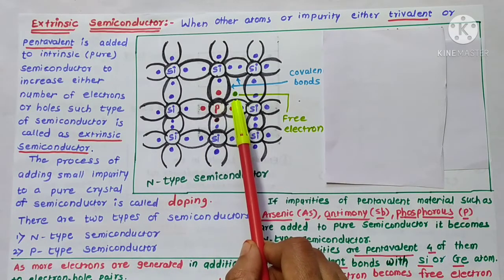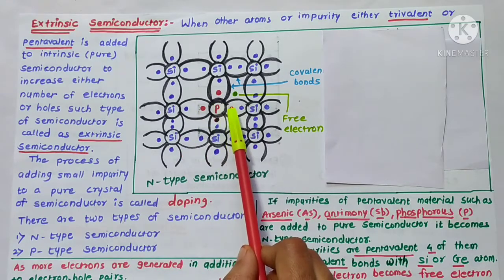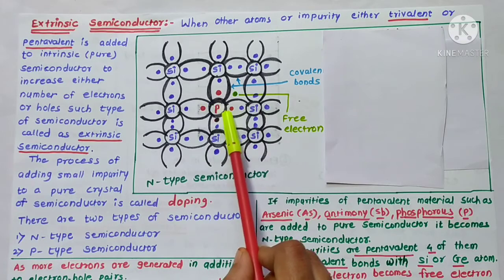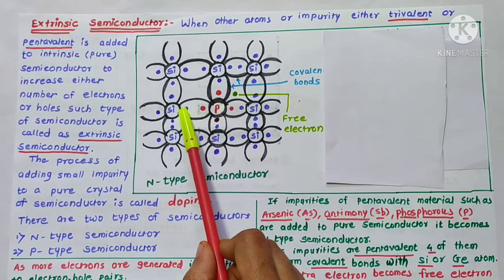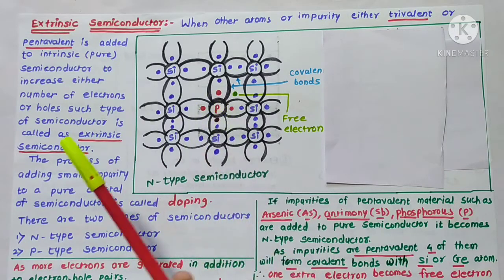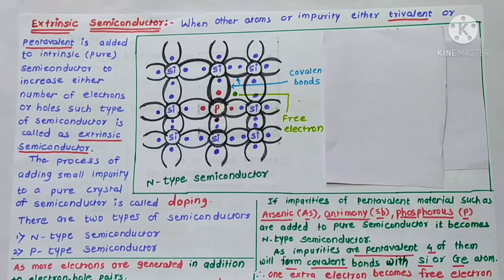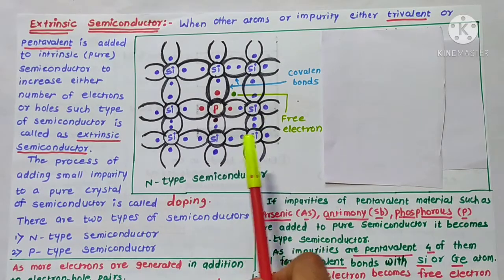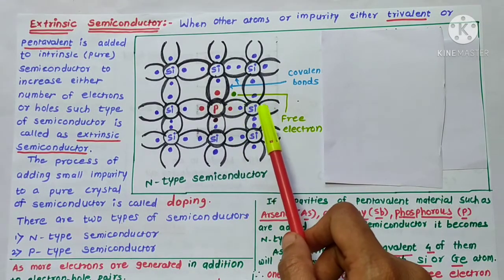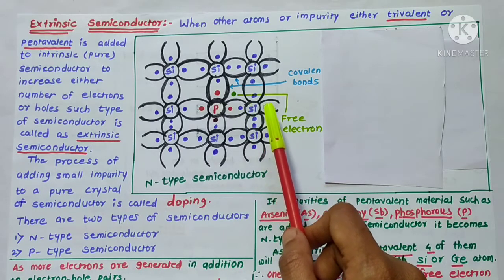In this diagram, the 4 covalent bonds formed with adjacent silicon are shown in red color, representing the 4 valence electrons of phosphorus. The remaining one valence electron becomes a free electron. Since this electron is far away from the nucleus and free from the covalent bond, it is available as a conduction band electron for carrying current.